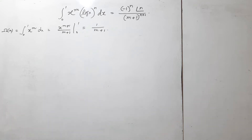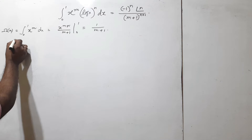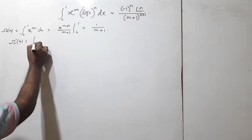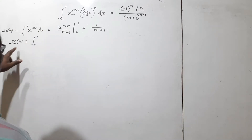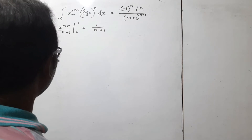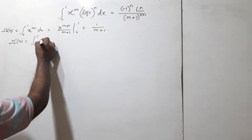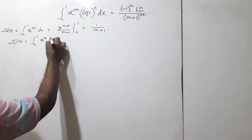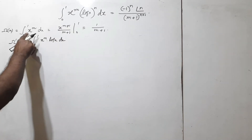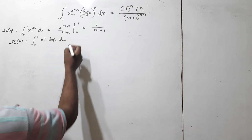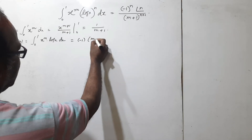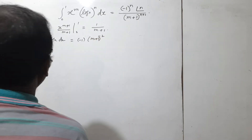If we differentiate, then ρ'(m) with respect to m — the derivative of x to the power m with respect to m is like a to the power x. You know the derivative of a^x is a^x times log a, and for that this becomes x^m times log x, and here is dx. If we differentiate the right-hand side with respect to m, that side is constant and this is variable, so we get (-1) times (m+1)^(-2).